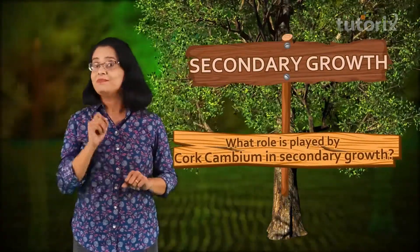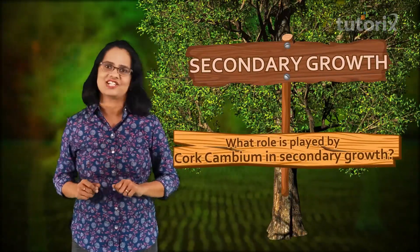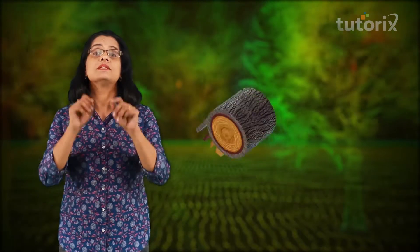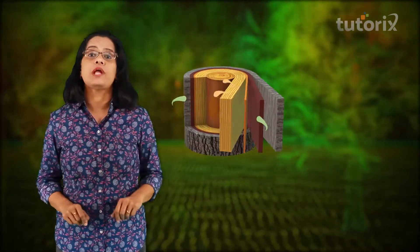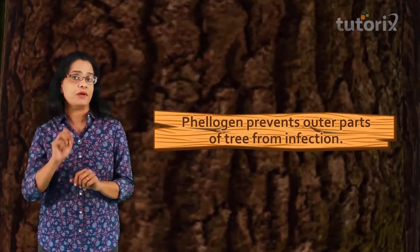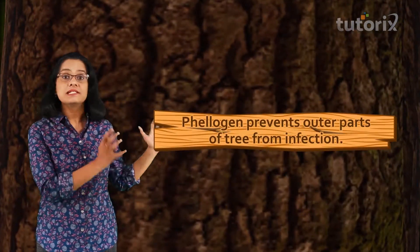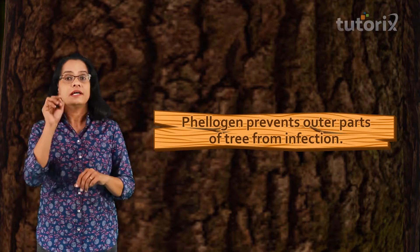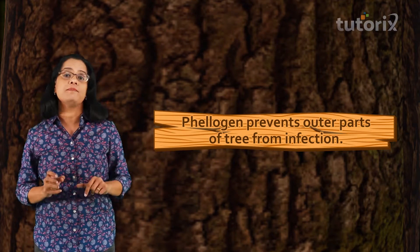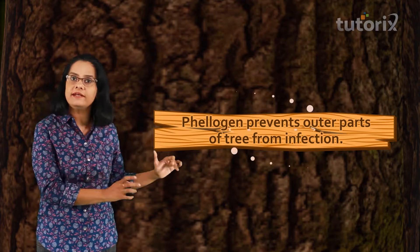Cork cambium is also known as phelogen. Phelogen basically prevents the outer parts of the tree from infection, because as the plant increases in thickness, the outer tissues are being ruptured and it is important for them to be protected against infection.